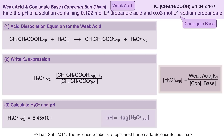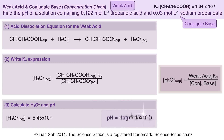Then I'm going to use the pH formula, substitute in the concentration of hydronium ions, and we get a pH of 4.26.